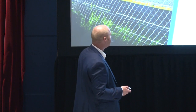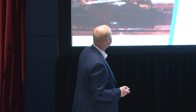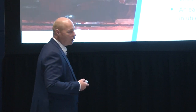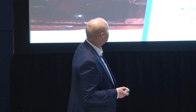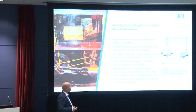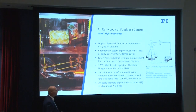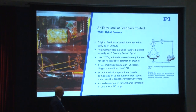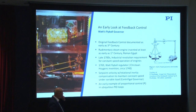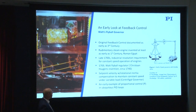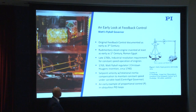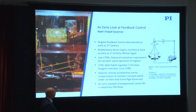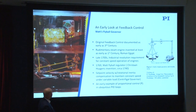Starting with history and some fundamentals of feedback control. Matt thought it would be amusing because I'm the older one and British, maybe I knew a bit more about history. If we look at feedback control, it's actually documented as early as the 3rd century — in Alexandria in Egypt, when the Romans were there, there was a water clock that kept time by regulating water flow, which we consider one of the first documented evidence of a feedback system.